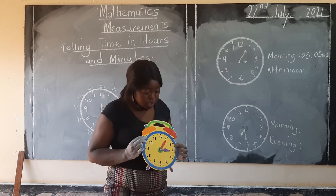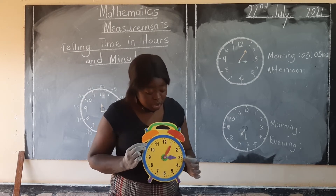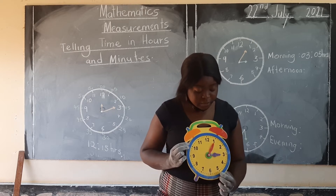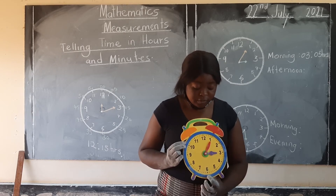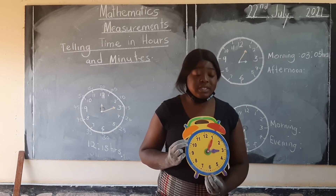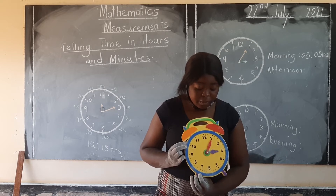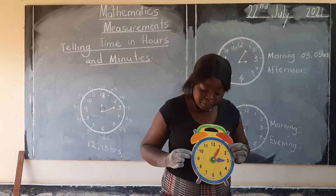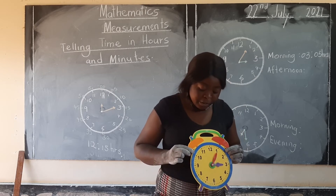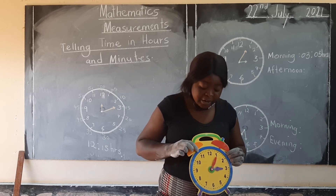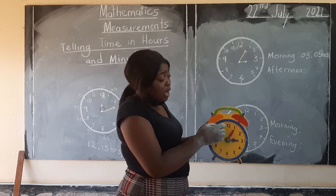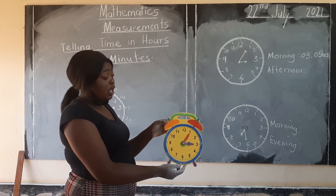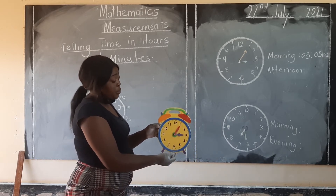When the minute hand points at 2, it shows 10. At 3, it shows 15. At 4, it shows 20. At 5, it shows 25. At 6, it shows 30. At 7, it is 35. At 8, it shows 40. At 9, it shows 45. At 10, it shows 50. At 11, it shows 55. At 12, the time has changed. So the time on our clock in the morning is 03:05.